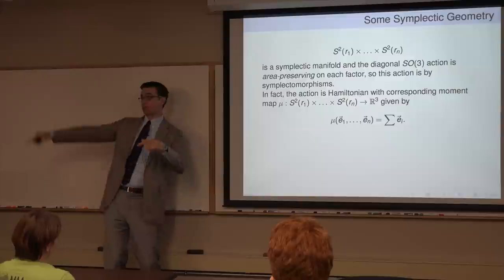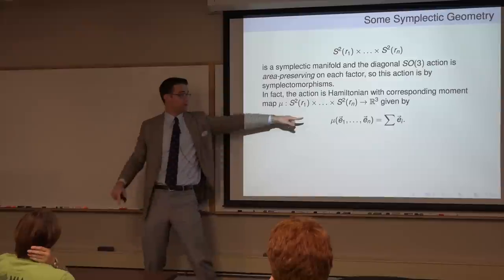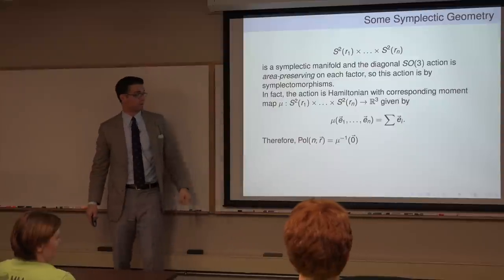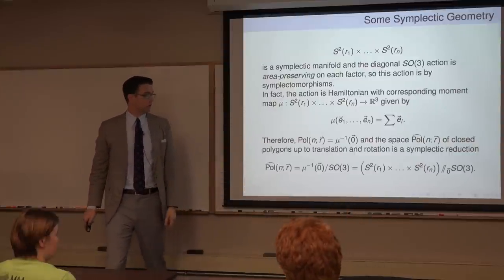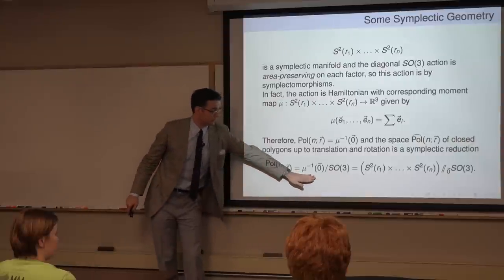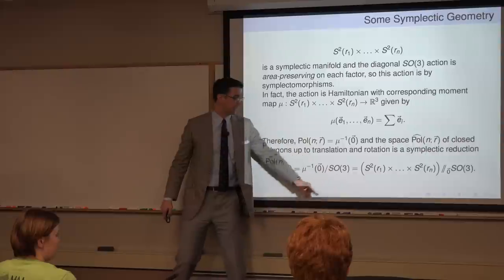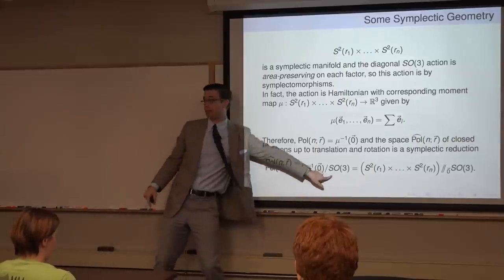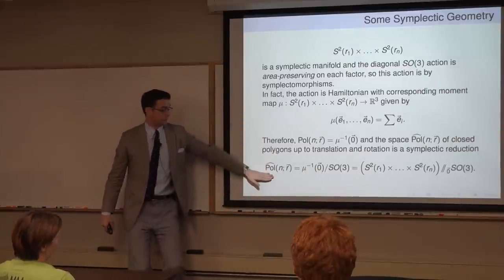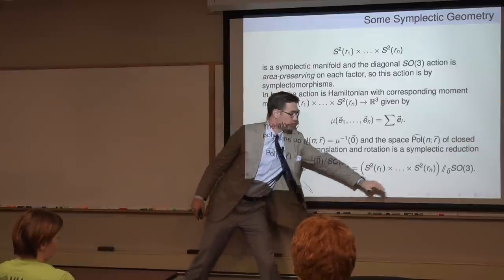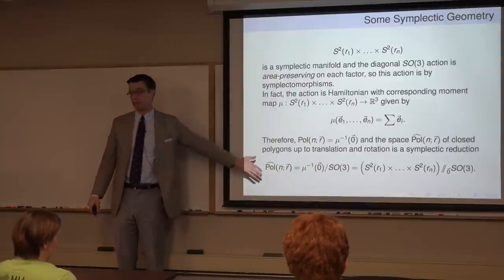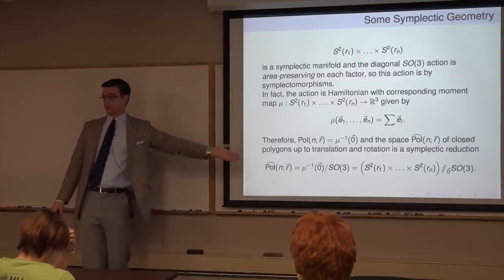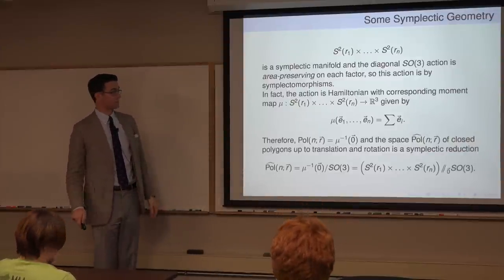If you take the inverse image of zero under the moment map and divide by the SO(3) action, you get the space of polygons modulo translation and rotation — the space you really care about. This construction is called symplectic reduction: the symplectic reduction of the product of two-spheres by the Hamiltonian SO(3) action.